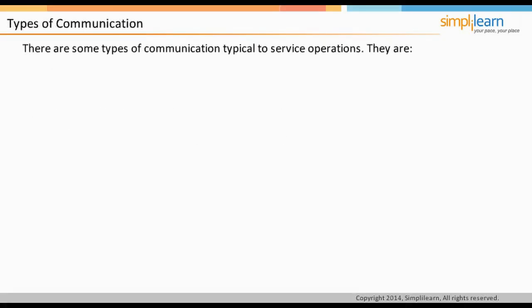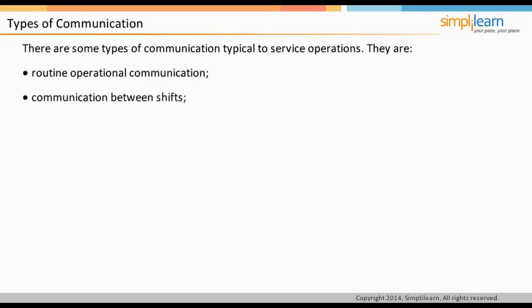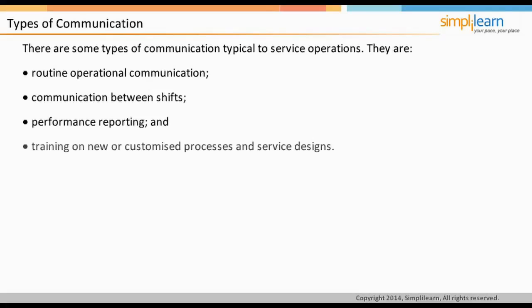Some types of communication are typical to service operations: routine operational communication, communication between shifts, performance reporting, and training on new or customized processes and service designs. Routine operational communication includes incident tickets resolved on time and communication between the service desk and users or technical teams. Communication between shifts includes shift handover reports. Performance reporting covers communication related to emergencies like outage or service downtime notifications. Training on new or customized processes and service designs is another form of communication related to service operation.